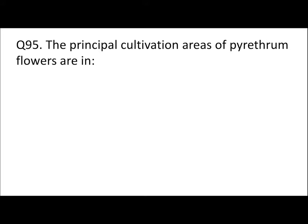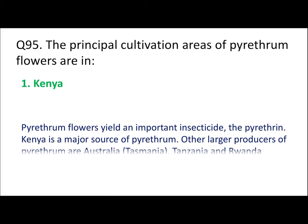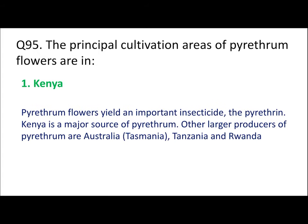Question 95: The principal cultivation areas of pyrethrum flowers are in Kenya, Malaysia, India, or Sri Lanka? The principal cultivation areas are in Kenya. Other countries that produce significantly larger amounts include Australia, Tanzania, and Rwanda.